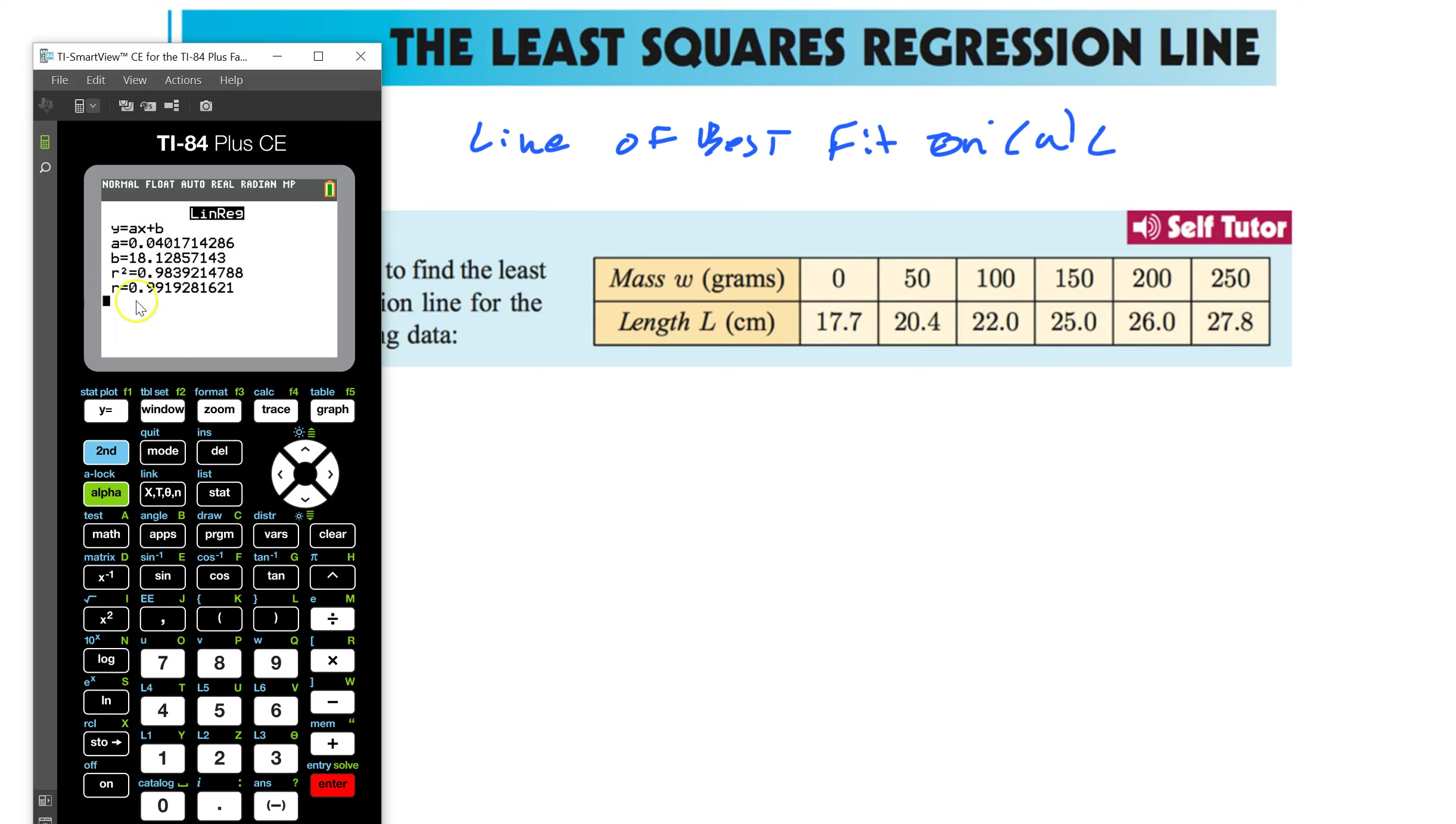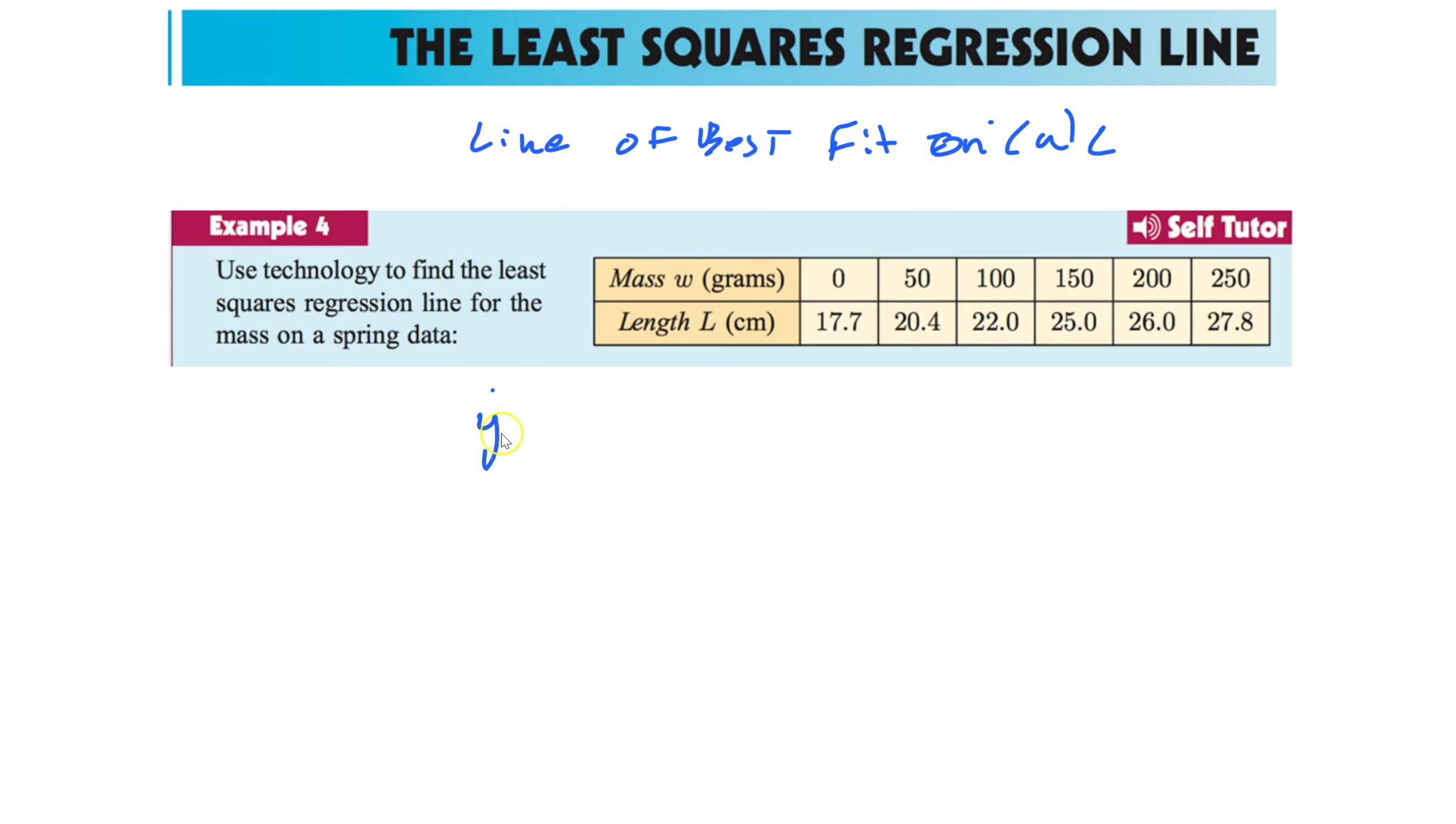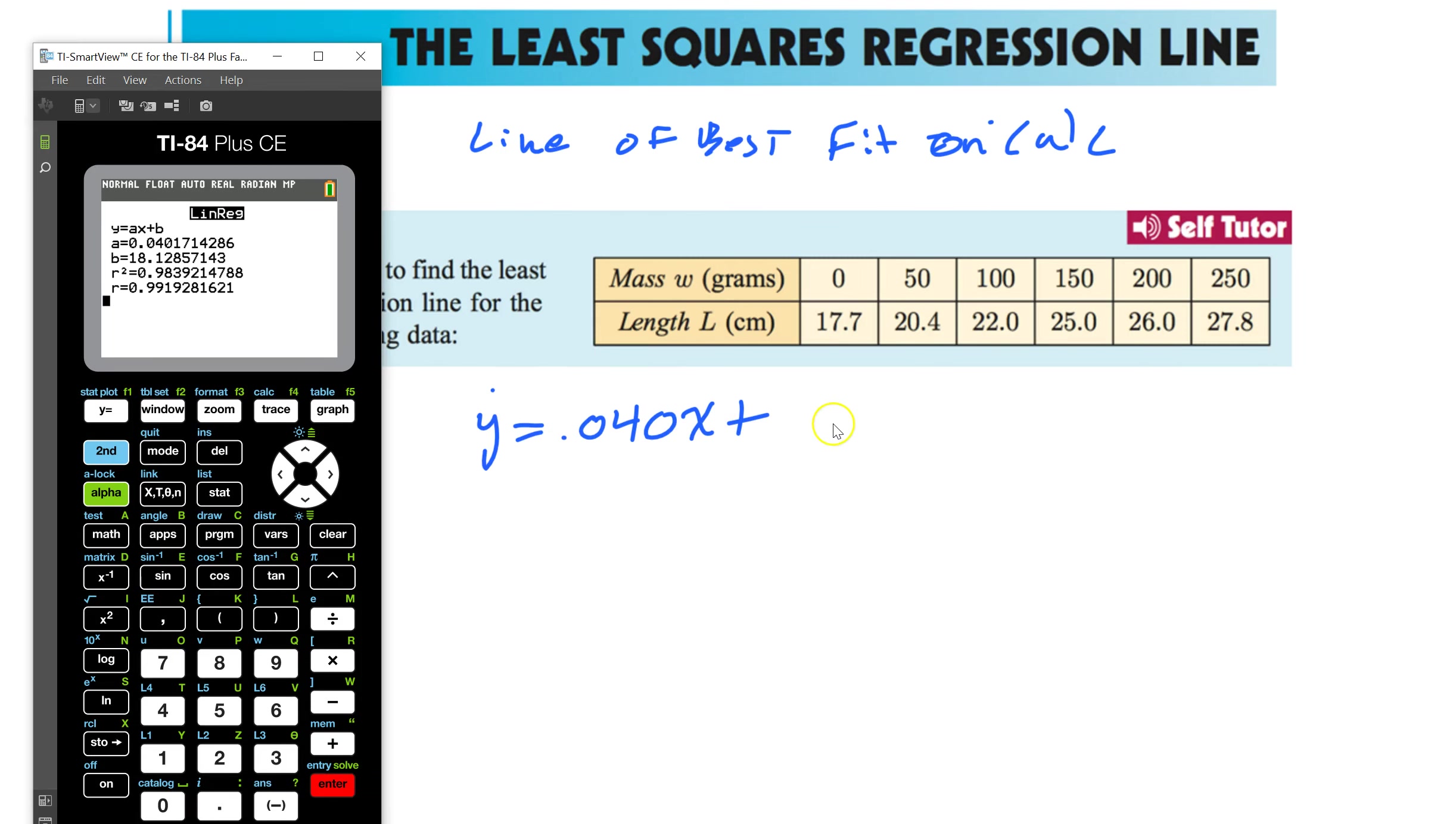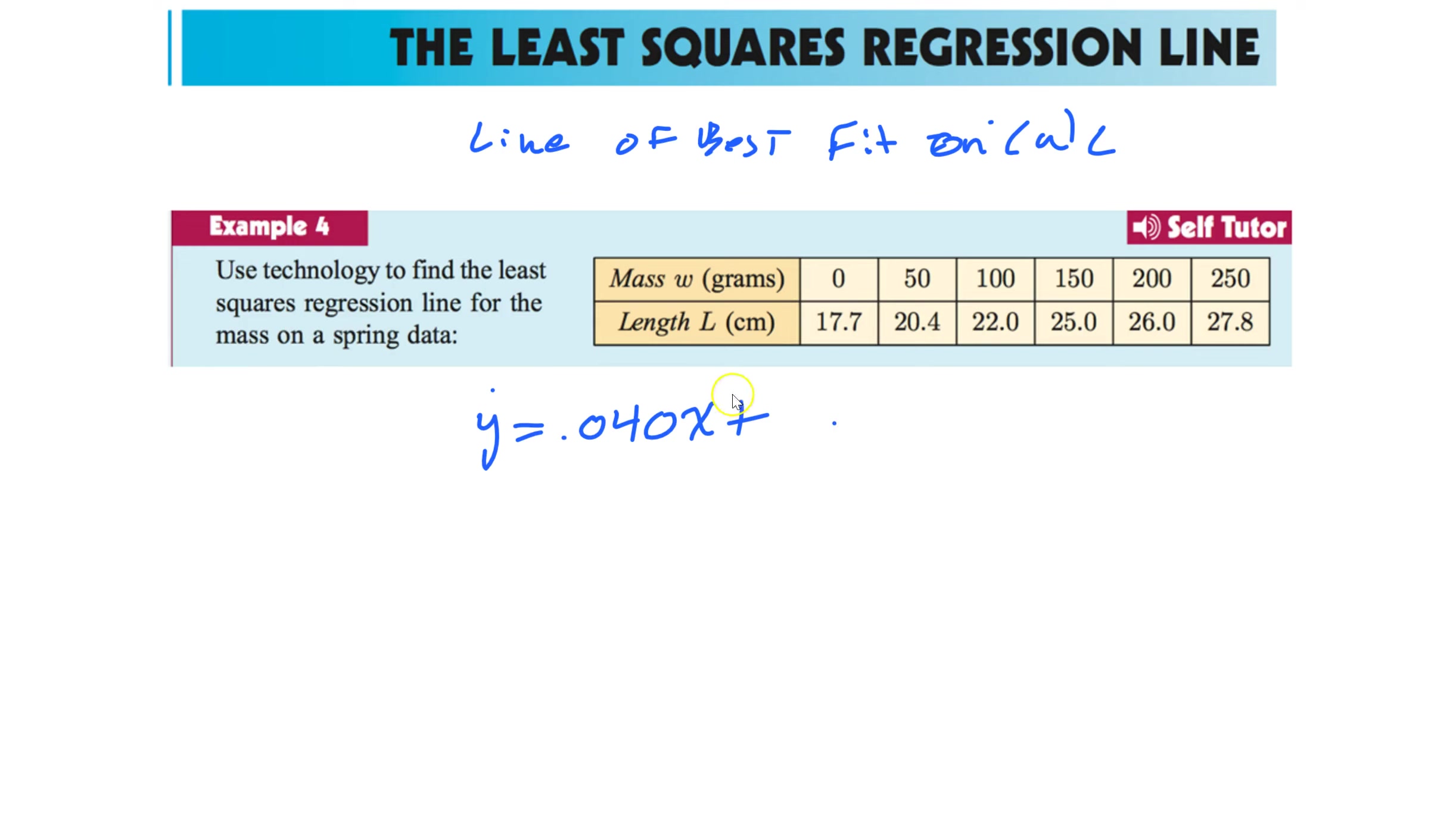And that's our equation. So see y equals x. Ax plus b. And they give you what the a is. Use three sig figs. And they give what the b is. And they even give you the R. This is a very strong correlation. 0.99. It's almost perfect. So our thing is going to be y equals 0.040x plus 18.1.